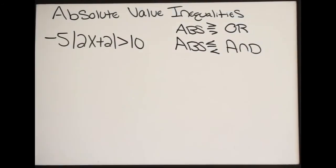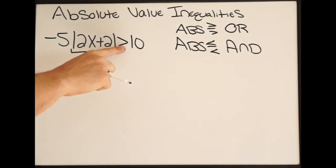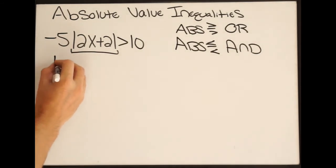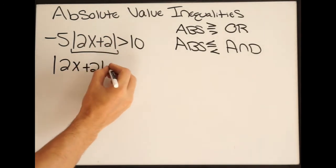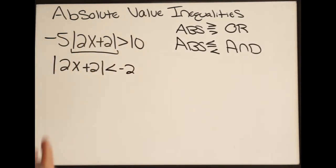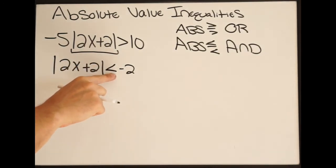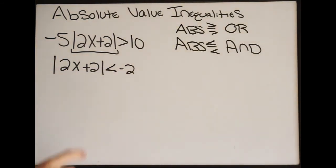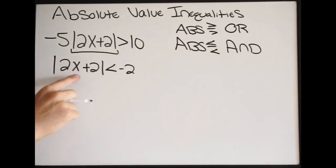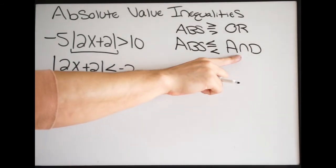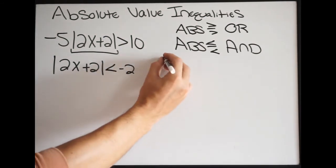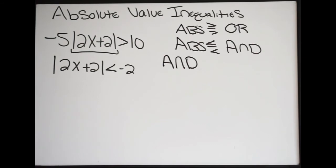Let's try one more example. Our first step is to isolate the absolute value — I need to get rid of this negative 5. Notice it is multiplication, so I'm going to divide both sides by negative 5. Remember your rules when dealing with inequalities: if you divide or multiply by a negative, you need to flip the inequality. So when I divide both sides by negative 5, I get the absolute value of 2x plus 2, flip the inequality, and this gives me negative 2, because 10 divided by negative 5 is negative 2. Now we look at our inequality — the absolute value is isolated and it is less than, so we're using a conjunction — AND as our separator.